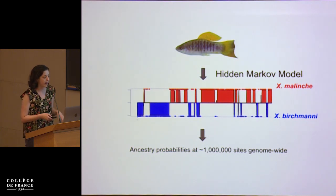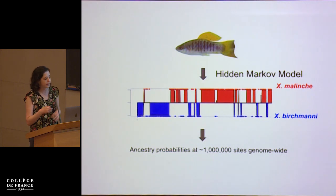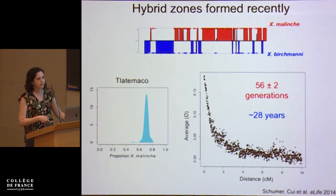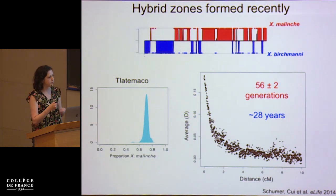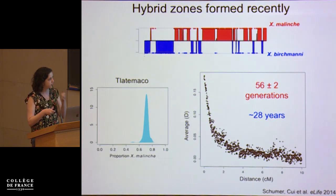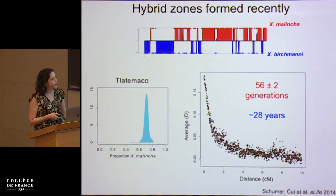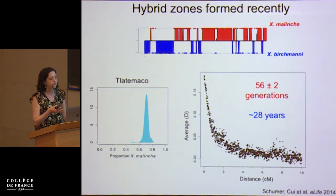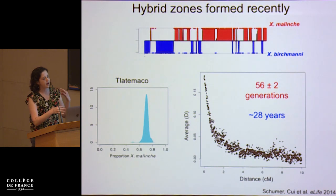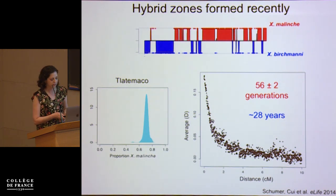This dataset has allowed us to ask powerful questions about the history of populations and selection on them. One early observation was that many of the populations appear to have formed really recently. As recombination occurs, it breaks down associations between genetically linked sites, so you can use the decay of admixture linkage disequilibrium over genetic distance to understand when hybrid populations first formed. When we apply these methods to our three hybrid populations, we get estimates of initial admixture that are quite recent, between about 20 and 100 generations.